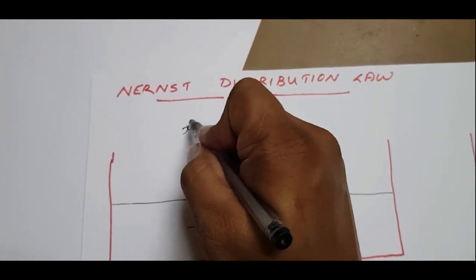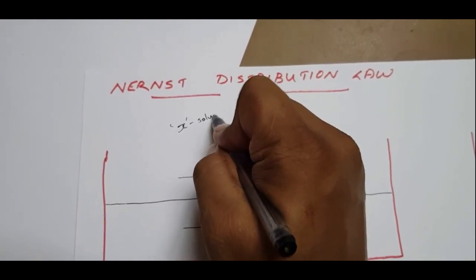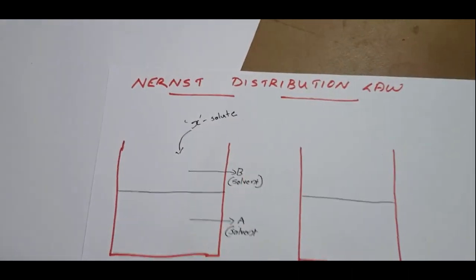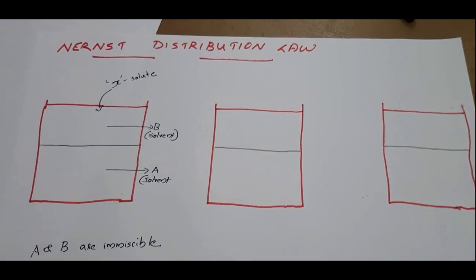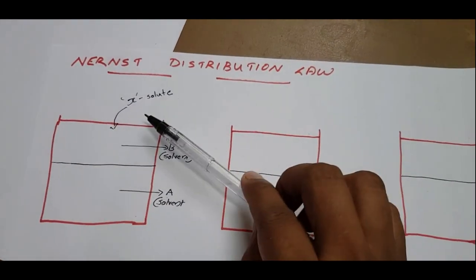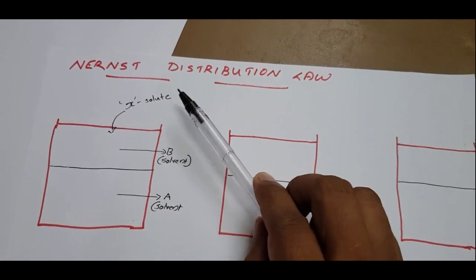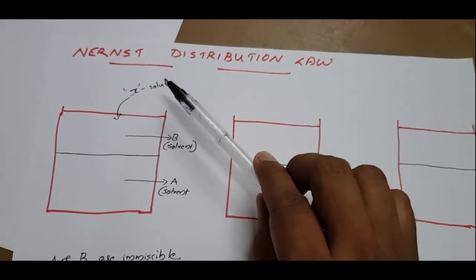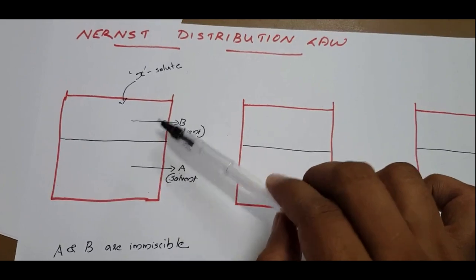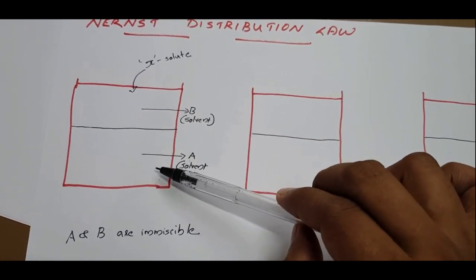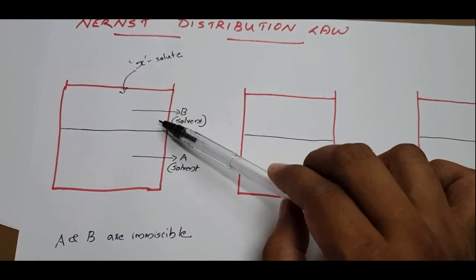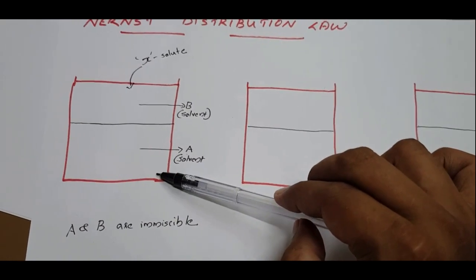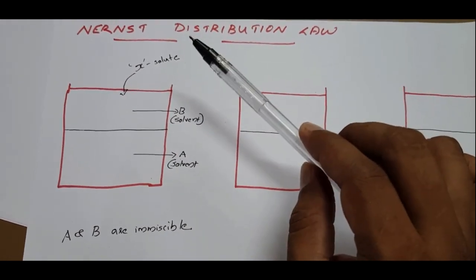Then what happens if we add a solute? X is the solute. If you add X, the solute, to this system, what happens if you add a solute to a solvent is that it forms a solution. Here X is distributed in two liquids — distributed to B and distributed to A — forming a solution with solvent A and with solvent B, because A and B are two immiscible liquids.